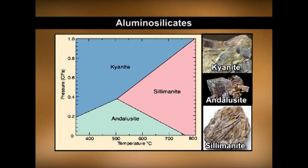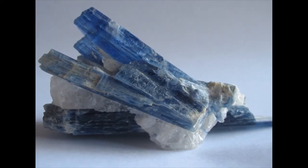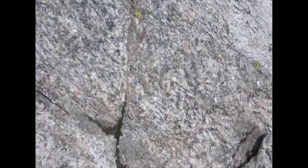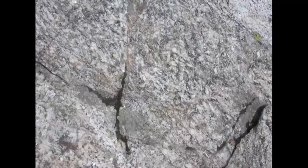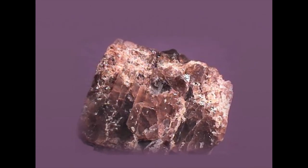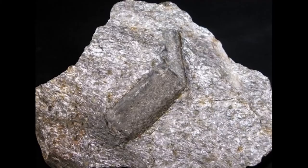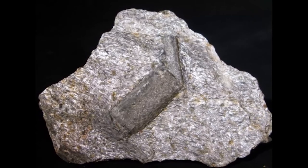Aluminosilicates too are characteristic of metamorphosed alumina-rich sedimentary rocks. Kyanite, sillimanite, and andalusite exhibit the best example of polymorphism. Triclinic kyanite is typically bladed, in shades of blue and off-white, with dual hardness of 7 across and 3.5 along the blade, and occurs in regionally metamorphosed pelitic rocks. Sillimanite occurs in prismatic or fibrous masses in shades of grey, green, and brown, with vitreous lustre, hardness 6 to 7, and specific gravity 3.3.